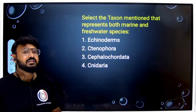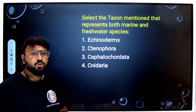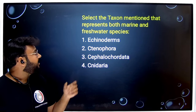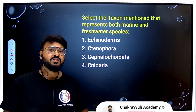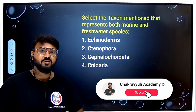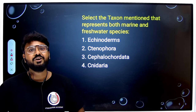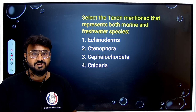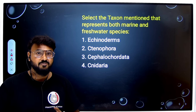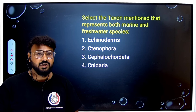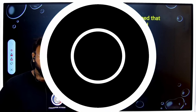The next question asks: select the taxon mentioned that represents both marine and freshwater species. This question is for your homework — make sure you solve it and answer in the comment box below. Don't forget to share with your friends who may need it. Keep following Chakrishan's Academy for more such videos. We are going to complete your NEET preparation in 45 days. Bye-bye for now.